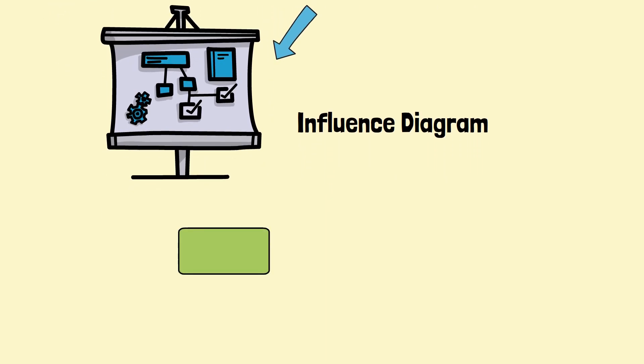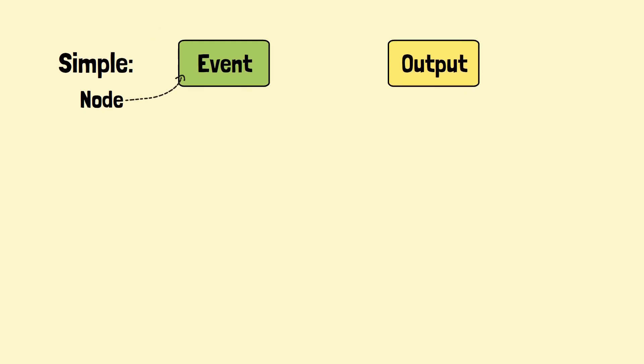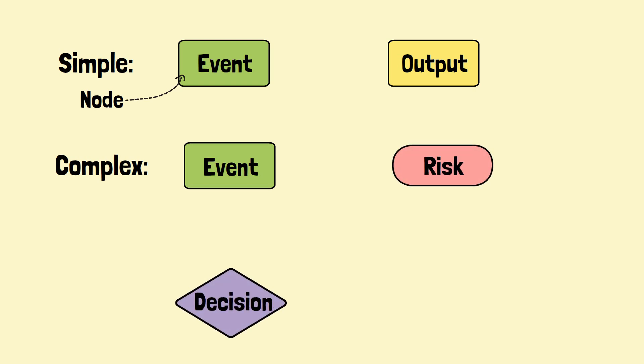Nodes are used to represent various situations, events, activities, and other project elements. A simple influence diagram may use just one shape to differentiate information in the nodes. In a more complex influence diagram, we could use rectangles to represent events or conditions, diamonds to represent decisions, ovals to represent risks or risk factors, and hexagons to show outcomes.